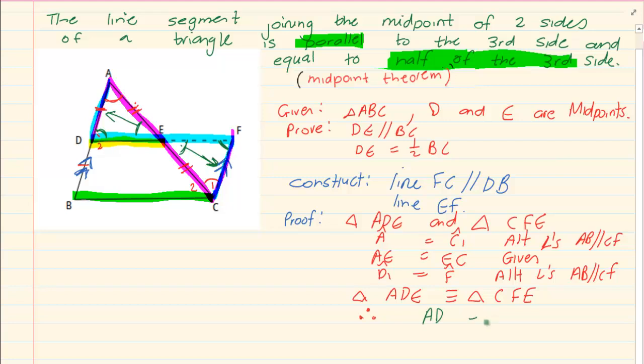AD is equal to CF because it is a deduction from congruency. Remember, if you prove that it is congruent, then the remaining sides and the remaining angles are equal. Which means AD is equal to CF. And likewise, E1 will equal to E2 and EF will equal to DE.